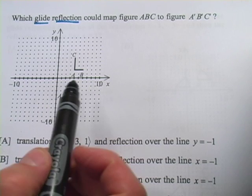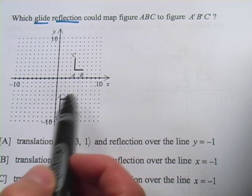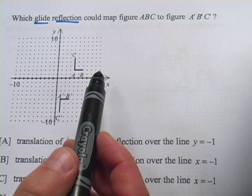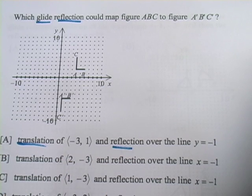It's a translation, so this L up here, the figure ABC, is going to get slid around some way, and reflection, and it's going to get flipped over.